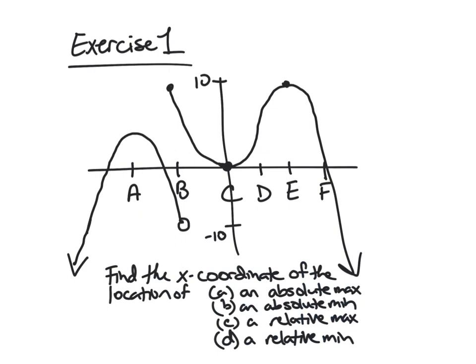Okay, and so here is exercise one. So I just drew a graph here, and I want you to find the x-coordinate of the location of all of these kind of in order. So an absolute maximum, an absolute minimum, or I should say of all of these. So there may be more than one answer per. Absolute maximum, absolute minimum, relative maximum, and relative minimum.